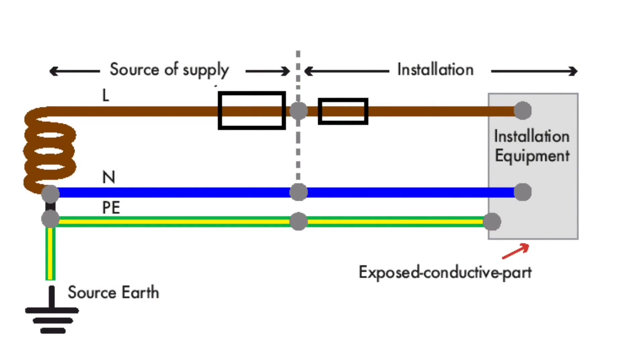The earth fault loop impedance path of an installation connected to a TNS earthing arrangement. In the event of there being a fault between the line conductor in the installation and an exposed conductive part, the fault path or earth fault path would be as followed.